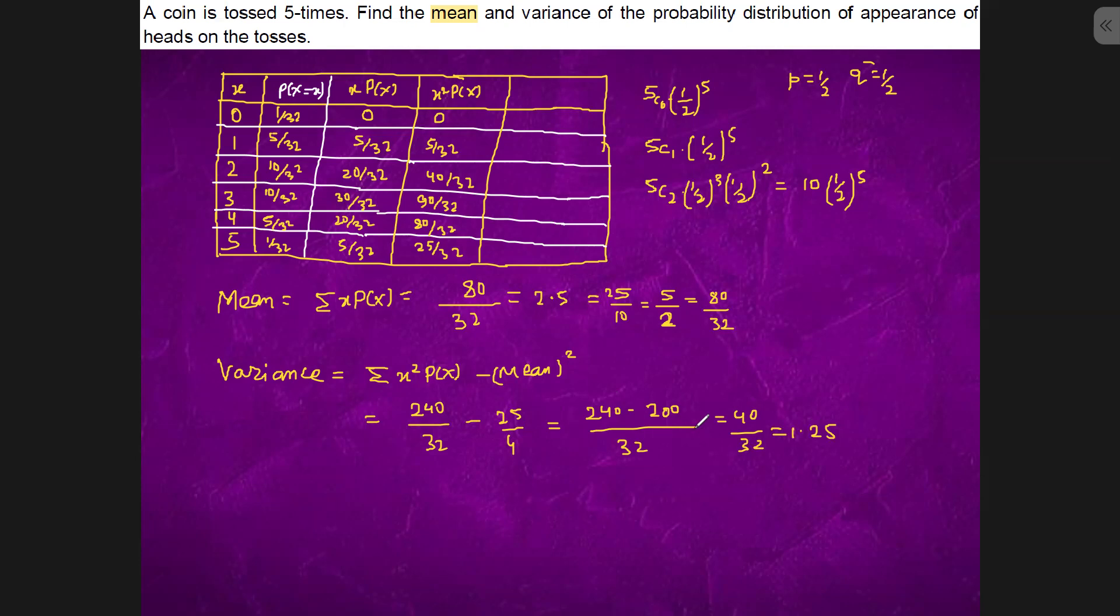So, we got in previous answer, we did the same question with different method. This could also be calculated as NP. So, N is 5, P is 1 by 2. Variance is NPQ, which is 5 times 1 by 2 times 1 by 2, which is 1.25. So, this is the same result from two methods.